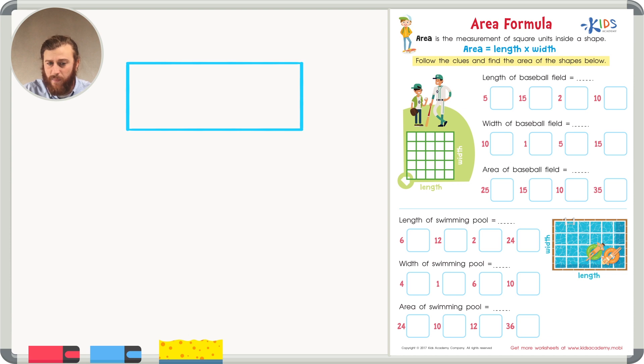In this rectangle there is a length of seven inches and a width of two inches. In order to find the area we can simply multiply seven times two.